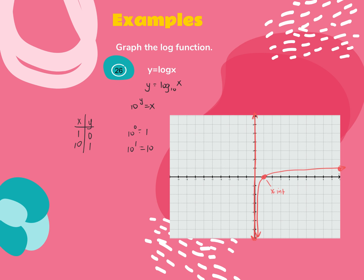Your asymptote is on the y-axis, so draw that and that's really the graph. The range is all real numbers, or negative infinity to positive infinity. The domain is from 0 to positive infinity — and it doesn't include 0, so use a parenthesis, not a bracket.